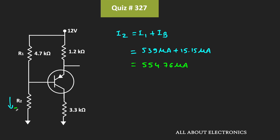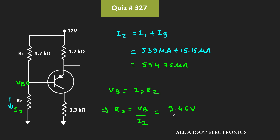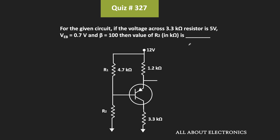I2 equals 554.76μA. We already know the base voltage, so we can find resistor R2. The base voltage VB equals I2 times R2, which means R2 equals VB divided by I2, that is 9.46V divided by 554.76μA. Calculating this gives approximately 17.06kΩ. So the value of resistor R2 is approximately equal to 17kΩ.